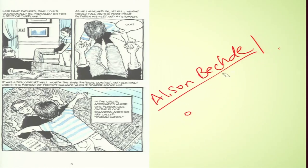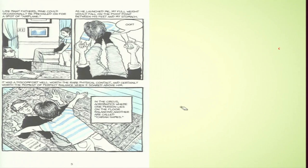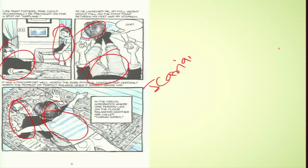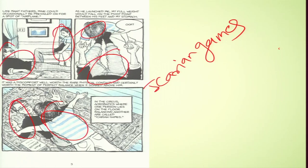The first page includes a remarkable level of complexity. A young Alison and her father play a game of airplane in which he propels her into the air on his feet. A text informs us that such acrobatics are called Icarian games — alerting us to a series of references that will occur throughout the book: Icarus, Daedalus, Joyce. Beside the father lies the book he had just been reading: Anna Karenina.